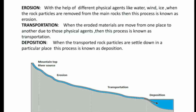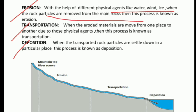Now we have different physical processes, which are mainly responsible for giving a particular shape to landforms like hills, mountains, plateaus, and plains. Those physical processes are: erosion, transportation, and deposition. Erosion: with the help of different physical agents like water, wind, and ice, when rock particles are removed from the main rocks, this process is simply known as erosion. For example, if you beat a rock surface continuously with a hammer, some rock particles will separate — that is erosion.